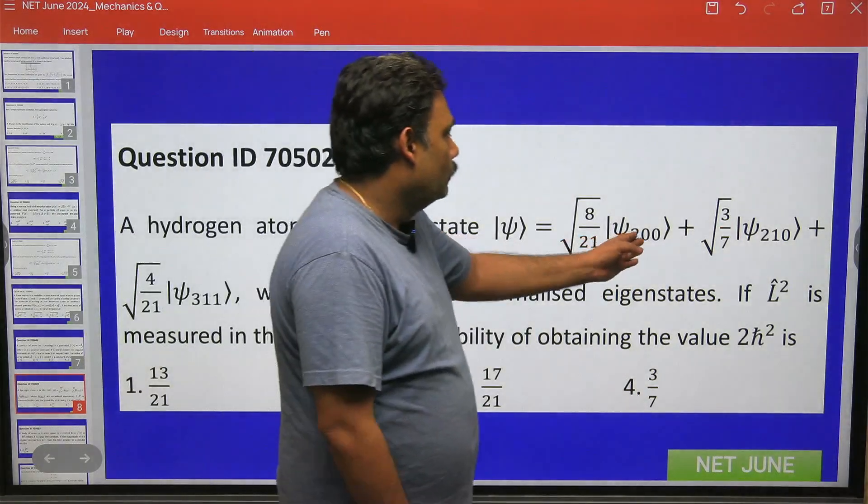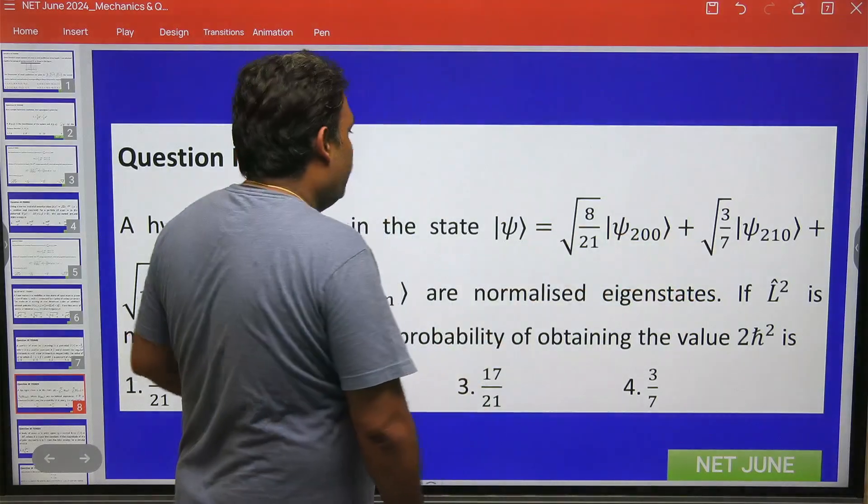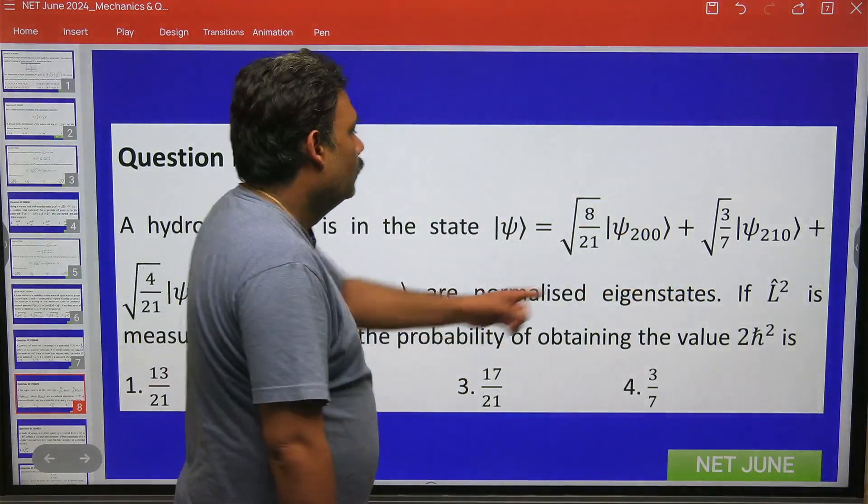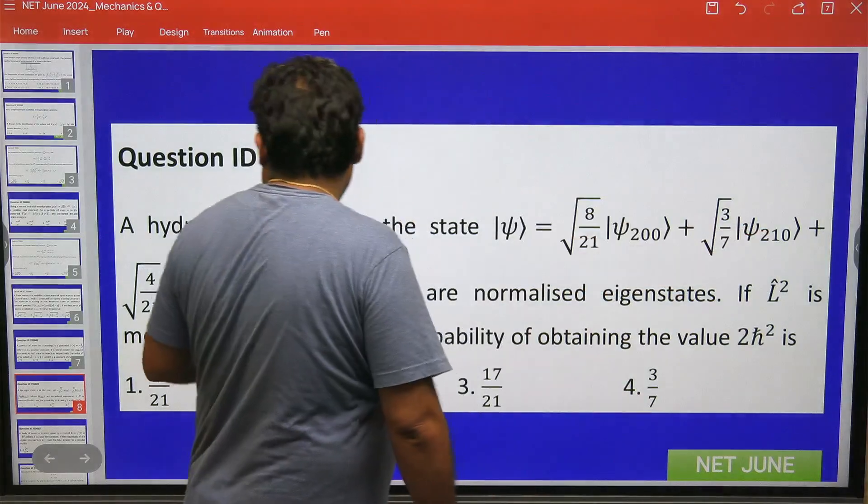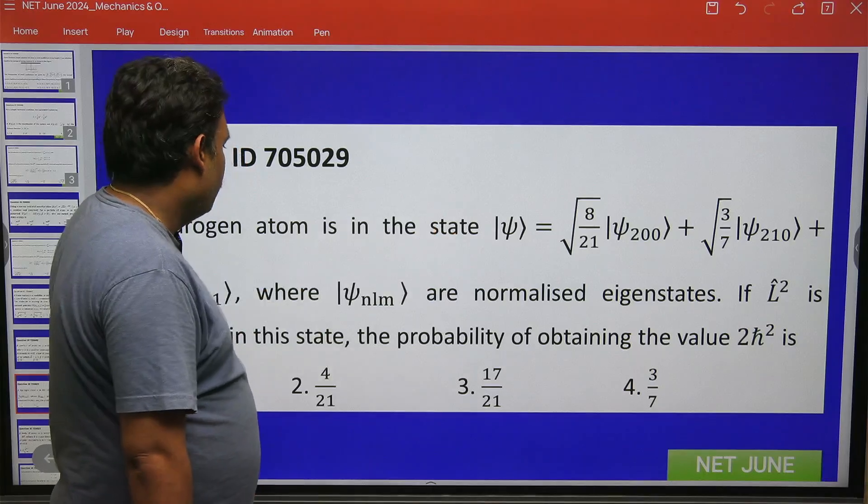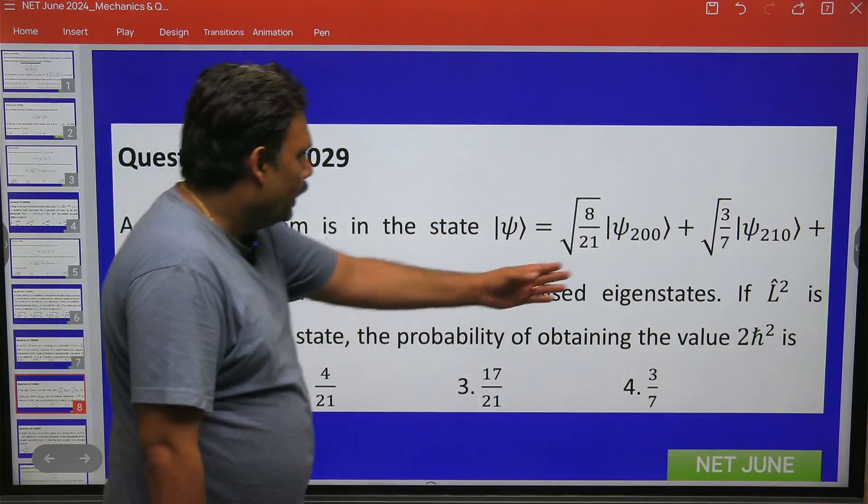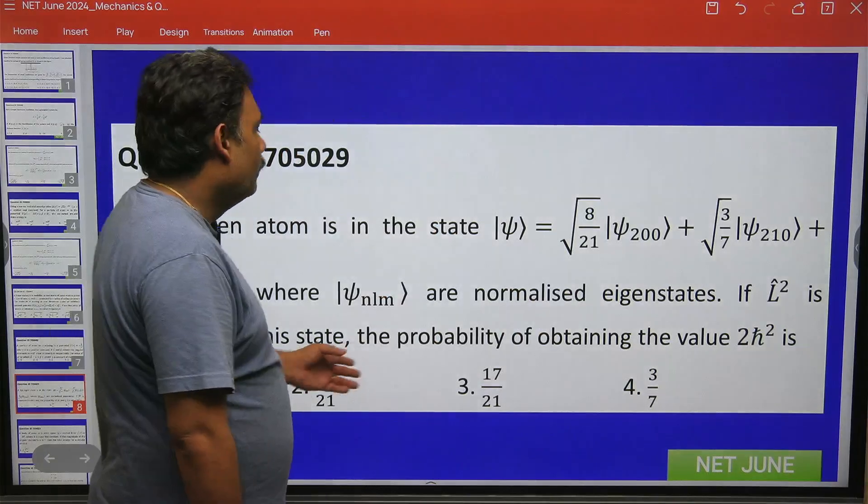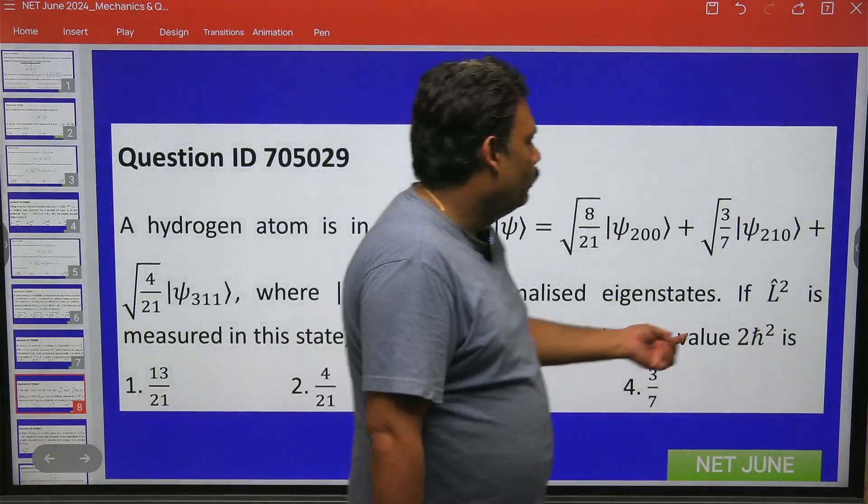But the l value is equal to 0, 1, and 1 here, and m value is equal to 0, 0, and 1. And ψ_nlm are the normalized eigenstates. If L² is measured, then what will be the probability that we will get 2ℏ²?